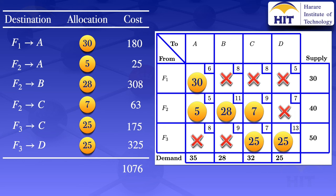So for the initial basic feasible solution, we have those allocations appearing in the table, which gives us a total cost of 1076.